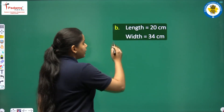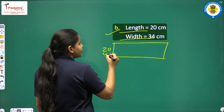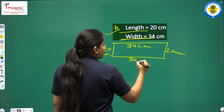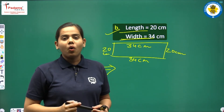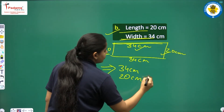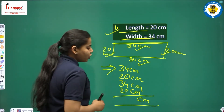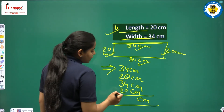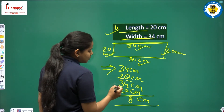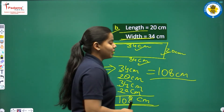Now let us solve part B. Length is 20 cm and width is 34 cm. The opposite sides are equal, so we add: 34 cm, 20 cm, 34 cm, 20 cm. Adding ones: 4 plus 0 is 4, plus 4 is 8, plus 0 is 8. Adding tens: 3 plus 2 is 5, plus 3 is 8, plus 2 is 10. So the answer is 108 cm — that is the perimeter of this rectangle.